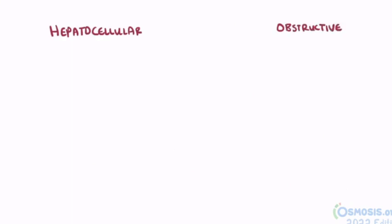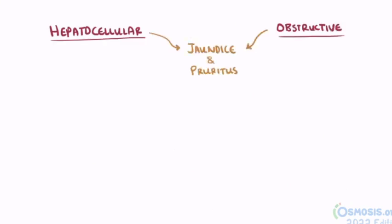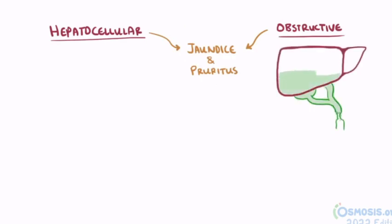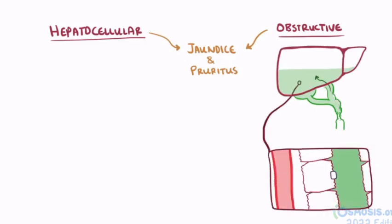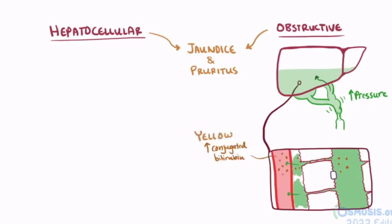A pretty common clinical finding in someone with either hepatocellular or obstructive cholestasis is jaundice and pruritus. In obstructive cholestasis, the bile accumulates in the liver and slowly seeps into the serum. When the bile ducts are obstructed, the pressure in the ducts increases, causing bile to leak through the tight junctions between hepatocytes into the interstitial space and into the serum. This means conjugated bilirubin gets into the blood, leading to the yellowed skin tone indicative of jaundice. Bile salts, another main ingredient of bile, can cause pruritus by depositing in the skin and making it itchy and irritated.